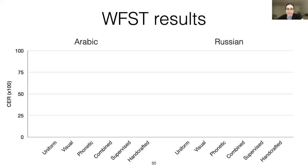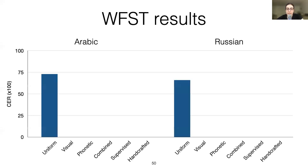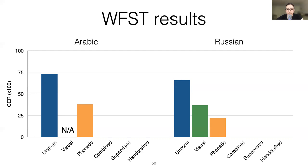Now let's look at some results. This graph shows character error rate, so lower is better. The FST without an informative prior doesn't do particularly well, but with the visual prior we see a lot of improvement for Russian. For Arabic, we don't have a visual prior because there weren't enough mappings in the Unicode confusables list. A phonetic prior is even better than the visual one, which aligns with our observation that people generally prefer phonetic substitutions to visual ones. And combining the phonetic and visual mappings in one prior gives the best result.